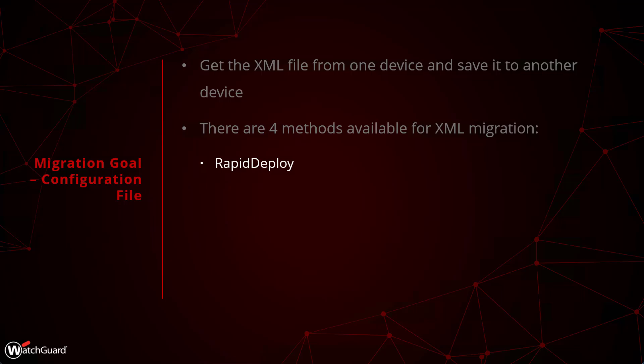The only thing to watch out for with Rapid Deploy is that when you upload an XML file, you need to ensure the version of that XML is either the same as the firmware version on the replacement device, or older. If you have an XML file built on a newer version than what the device is running, you must either downgrade that XML using WatchGuard System Manager's Policy Manager application, or upgrade the new device to a newer version so it can use the newer configuration.